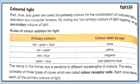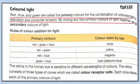The topic is colored light. Red, blue, and green are called the primary colors for the combination of colored light in television and computer screens. By mixing any two primary colors of light together we get secondary colors of light. When red, green, and blue are all added together, white color is formed. Red and green make yellow, red and blue make magenta, and green and blue make peacock blue.